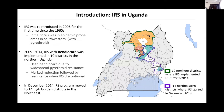However, resurgence was observed when IRS was withdrawn. From the withdrawal from the northern districts, it was moved down to the northeastern region in 14 districts. IRS in these districts has been with different insecticides that I'll be talking about. The map shows the northern Uganda districts — the green boundary is for the 10 districts where IRS was introduced in 2009, and the purple boundary is the 14 districts where IRS moved in 2014.